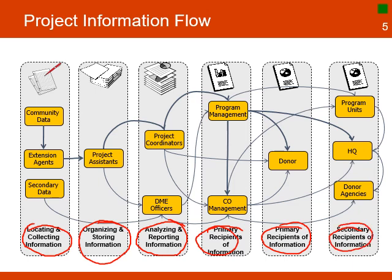Data and information flows from its sources to the people that use it to make decisions. During this journey, data is transformed into information and knowledge. Different people interact in the process, and all of them have a different role. But the flow is not one way — it also flows backward to make changes that will help improve the project interventions.